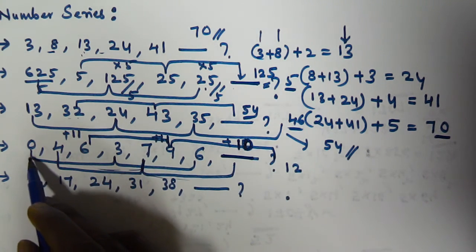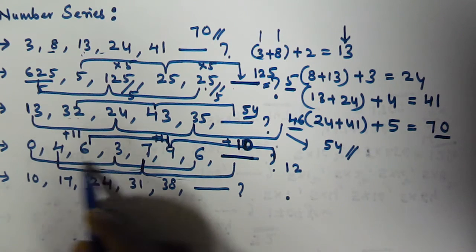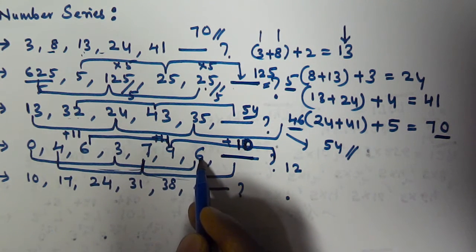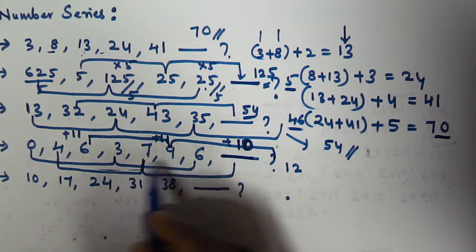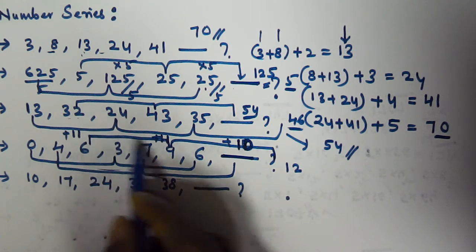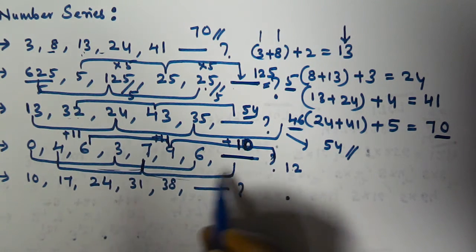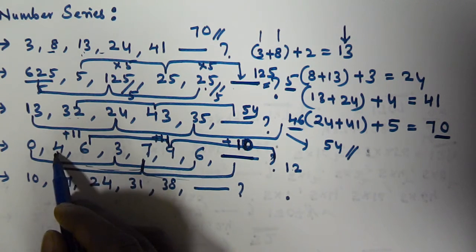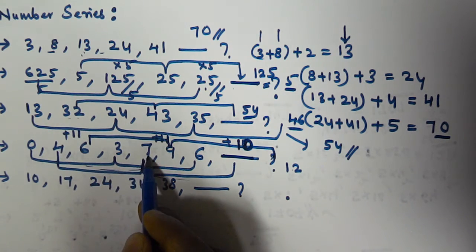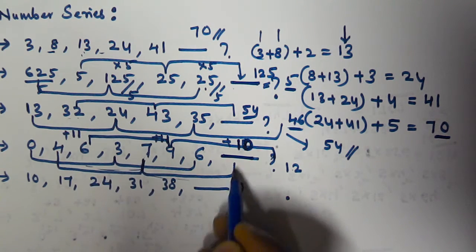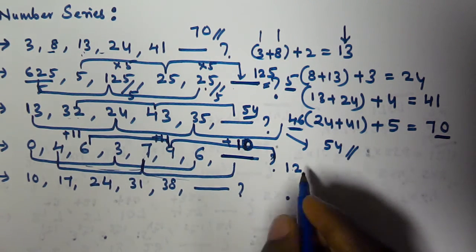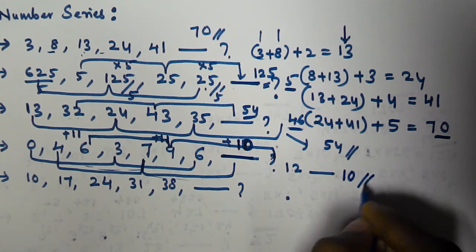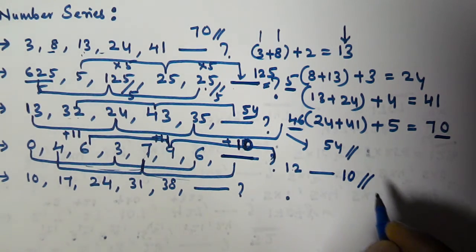Everywhere we are adding 3. So 0 plus 3 is 3, 3 plus 3 is 6. And 6 plus 3 is 9, 9 plus 3 is 12. From the second series, 4 plus 3 is 7, and 7 plus 3 is 10. So the next number that comes in this series is 10.